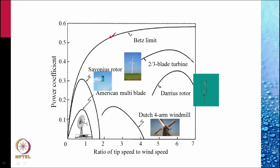The Dutch four-armed windmills have a curve like this. The American multi-blade turbine has a curve like this. Savonius rotor is not very efficient and works with lower tip speed would give a curve like this. And two to three blades horizontal axis turbines would give you the best efficiency at relatively high tip speed ratio of 6 to 7.